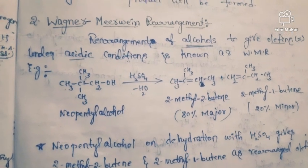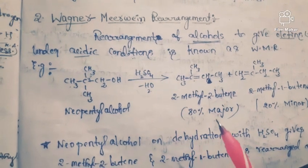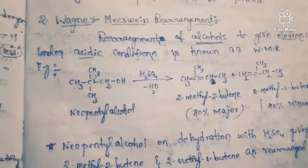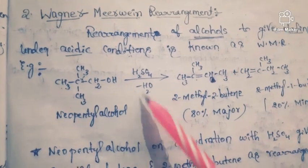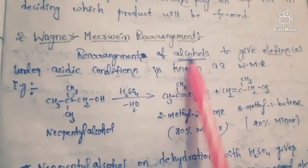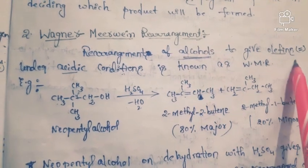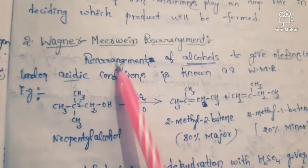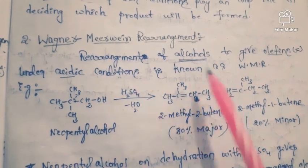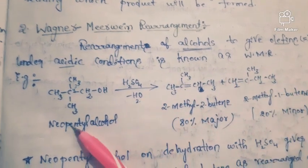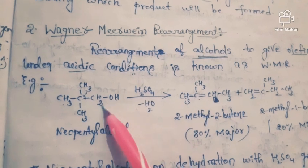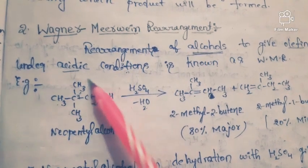The second rearrangement is Wagner-Meerwein rearrangement. Alcohols give olefins or alkenes under acidic conditions. Wagner-Meerwein rearrangement means rearrangement of alcohols to give olefins under acidic conditions. Here we have taken neopentyl alcohol — this is a neopentyl group with an OH group added, making it neopentyl alcohol.